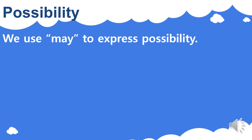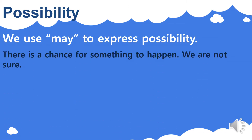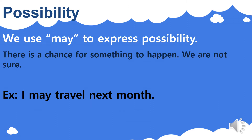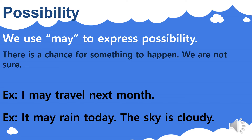Then we have possibility. We use may to express possibility — there is a chance for something to happen. We are not sure that it will happen, but there is a big chance. For example: 'I may travel next month.' I'm not quite sure yet, but there is a big chance that I may travel next month. Another example: 'It may rain today.' The sky is cloudy, so I think there is a big chance it may rain today.